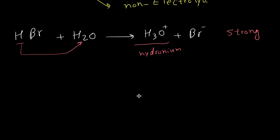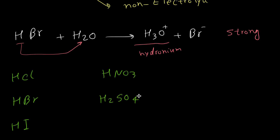The six strong acids are: HCl (hydrochloric acid), HBr (hydrobromic acid), HI (hydroiodic acid), HNO3 (nitric acid), H2SO4 (sulfuric acid), and HClO4 (perchloric acid). Solutions of these six acids in water always produce a strong electrolyte.